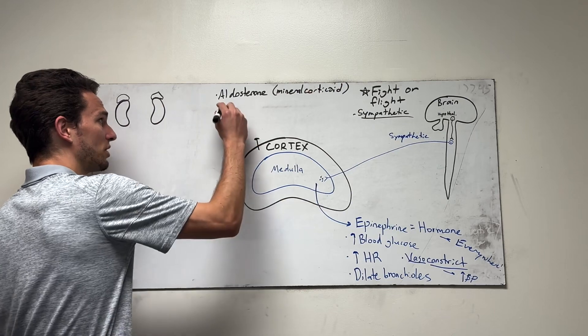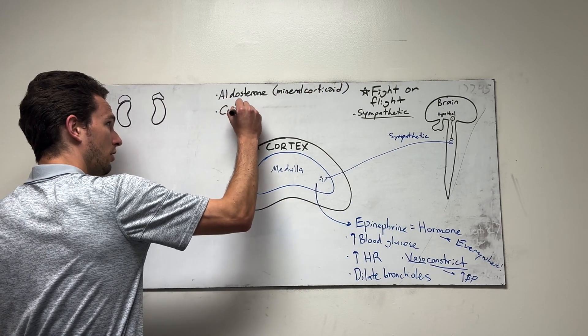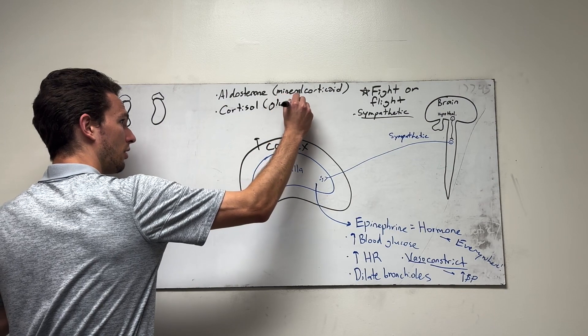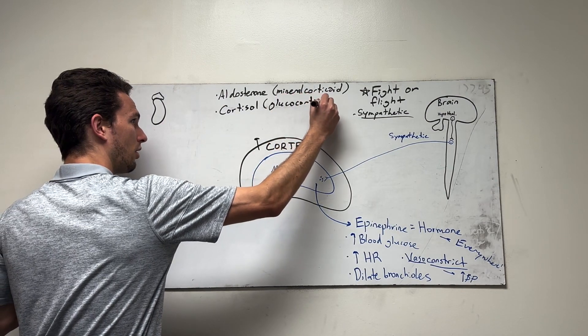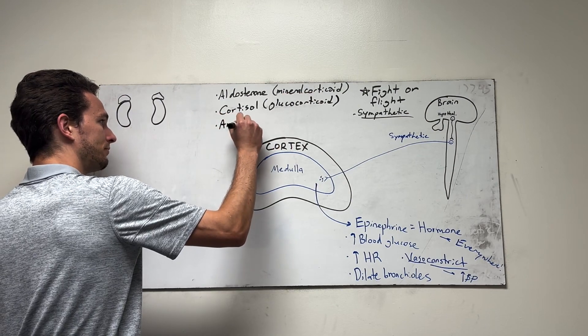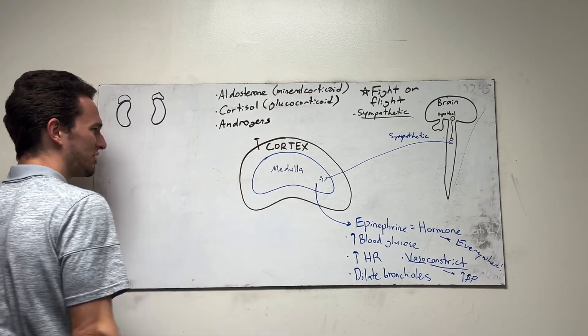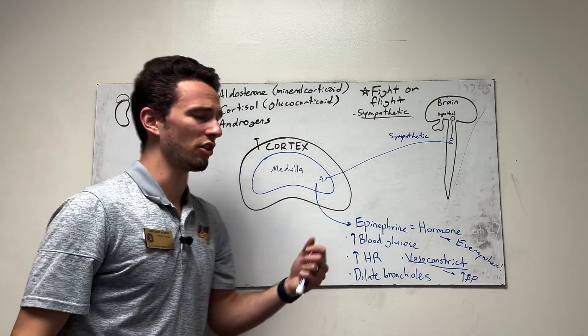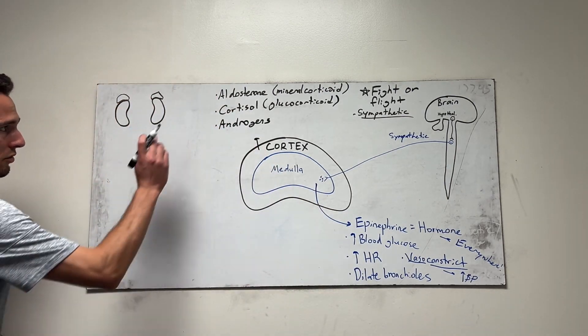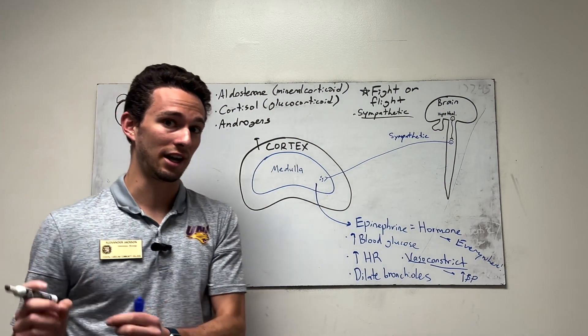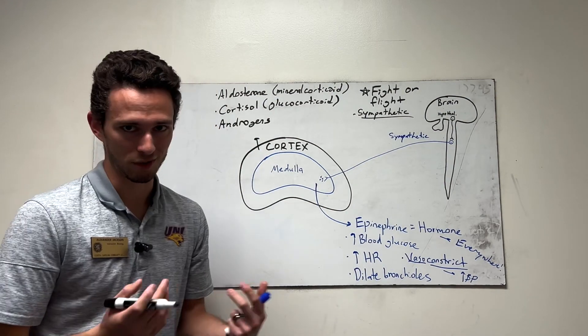The second one will be cortisol, which you may see as a glucocorticoid. And then the last one is going to be androgens, which actually means like male stimulation for different sexual characteristics, but they're also produced by females as well. So these are the three that will be secreted by the adrenal cortex, but they're released in different times and for different functions, which makes sense, right?